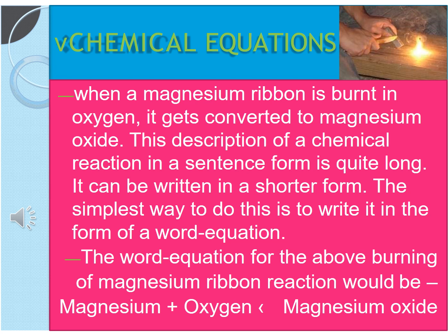We have started the chapter by two terms: chemical reaction which we had already discussed and second is chemical equation. So now we will start chemical equation. The symbolic representation of reaction is called as chemical equation. Here it is given: magnesium plus oxygen gives magnesium oxide.